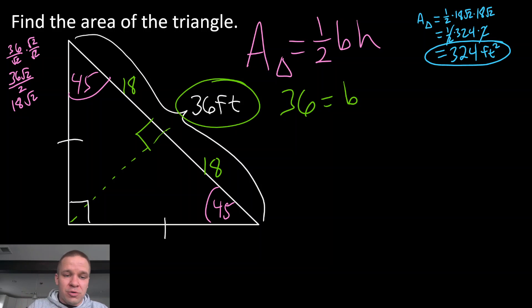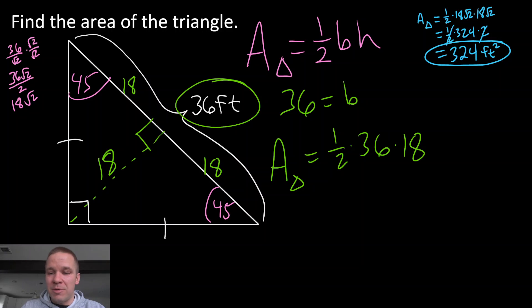Now this is a 45, 45, 90 triangle that we have right here, with 18 being one of my legs of that 45, 45, 90 triangle. So that makes it pretty easy to say that this is just 18 right here. So now what I have is one half, area of a triangle, is one half my base, which we said is 36 in this case, multiplied by my height, which is 18.